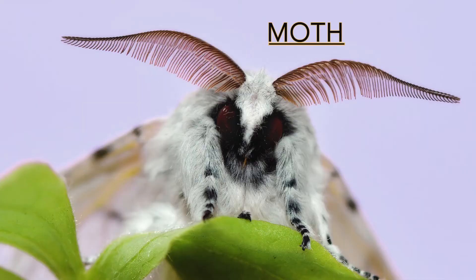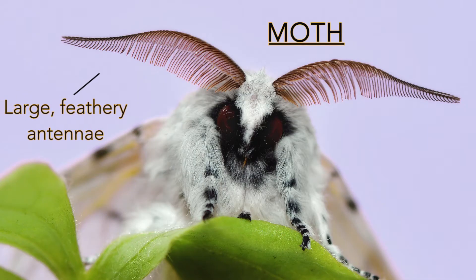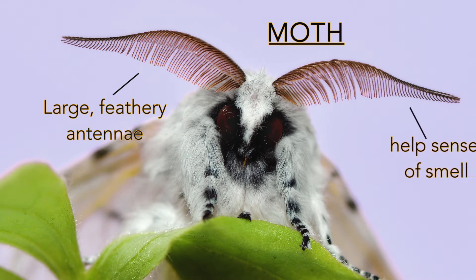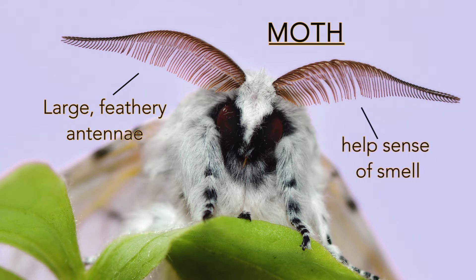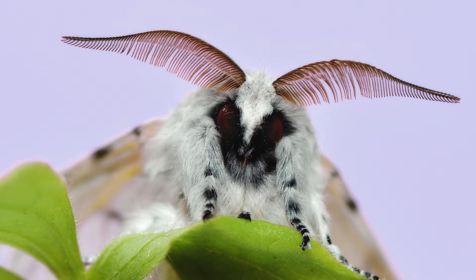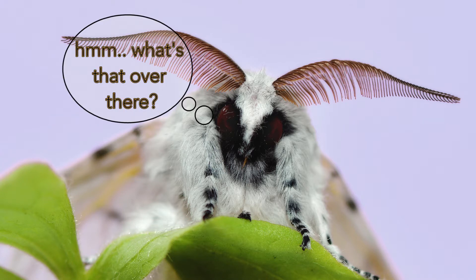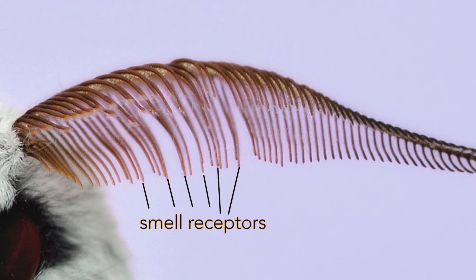Moth antennae are often feathery and without a knob at the end. With these large feathered antennae, moths tend to have a much more powerful sense of smell than butterflies — some moths can smell miles away! Each of those feathers acts like a tiny smell receptor.